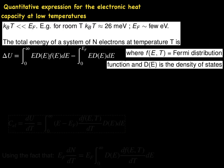The increase in total energy is ΔU equals U(T) minus U(0). That is the increase in energy when the system is heated from absolute zero to temperature T. In the expression for total energy, F is the Fermi-Dirac distribution function and D(E) is the density of states.